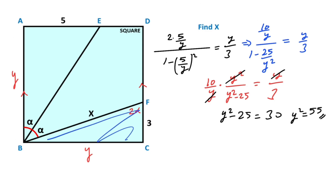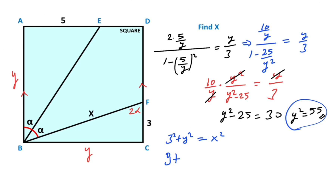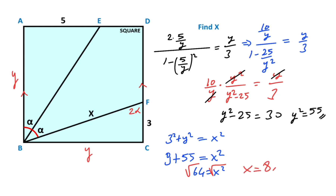Then if you focus on the triangle and apply the Pythagorean theorem, we get the value of x. So 3 squared plus y squared equals x squared. That is 9 plus y squared equals 9 plus 55 equals x squared, so 64 equals x squared. Taking the square root of both sides, x is going to be 8 units. That concludes the first method.